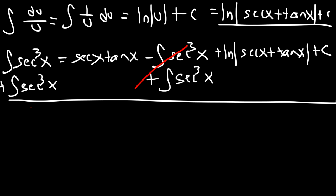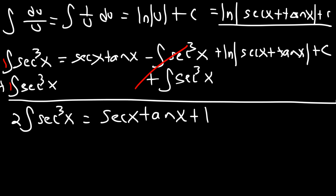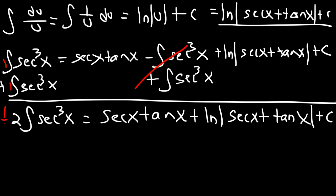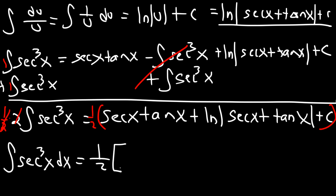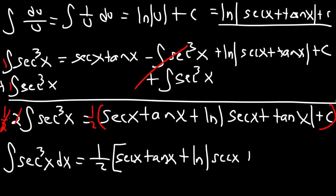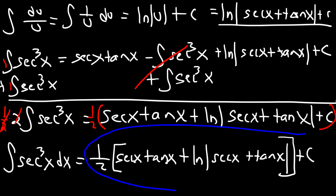On the right side, those two integrals cancel. On the left, 1 plus 1 is 2, so we have 2 times the integral of secant cubed x equals secant x tangent x plus natural log of secant x plus tangent x. The last thing we need to do is multiply both sides by one-half. A half times 2 is 1, giving us the final answer: the integral of secant cubed equals one-half times secant x tangent x plus the natural log of secant x plus tangent x, plus c. And that's how you integrate secant cubed.